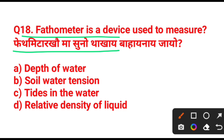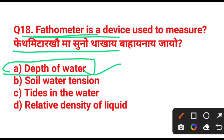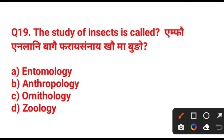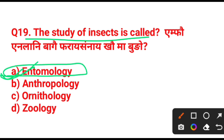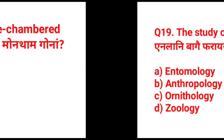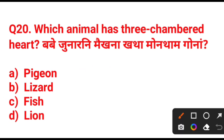Option A — depth of water. A fathometer is used to measure the depth of water. Next question: the study of insects is called — entomology. Option A — entomology. Everybody knows the study of insects is entomology.